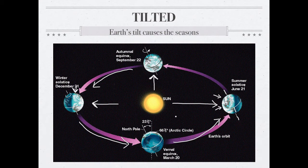Throughout this whole cycle, we recognize that for the most part, the equator is pointed directly at the sun the whole time. This is why the equator is warmer than anywhere else on Earth. It also means the equator does not experience seasons, and the length of the day at the equator doesn't really change from one season to the next. And as far as seasons go, when the northern hemisphere is having winter, the southern hemisphere is having summer.